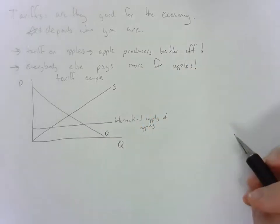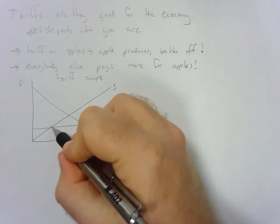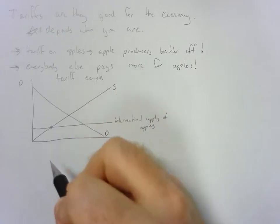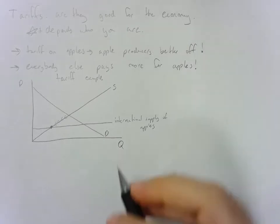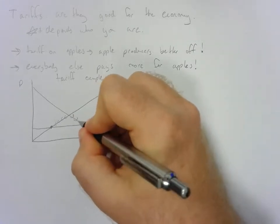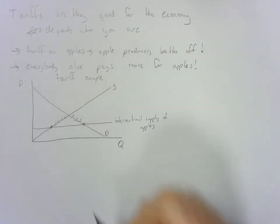What happens here is you can see that this will drive down the equilibrium price, which reduces the quantity supplied of domestic apples, but it increases the domestic consumption of apples.